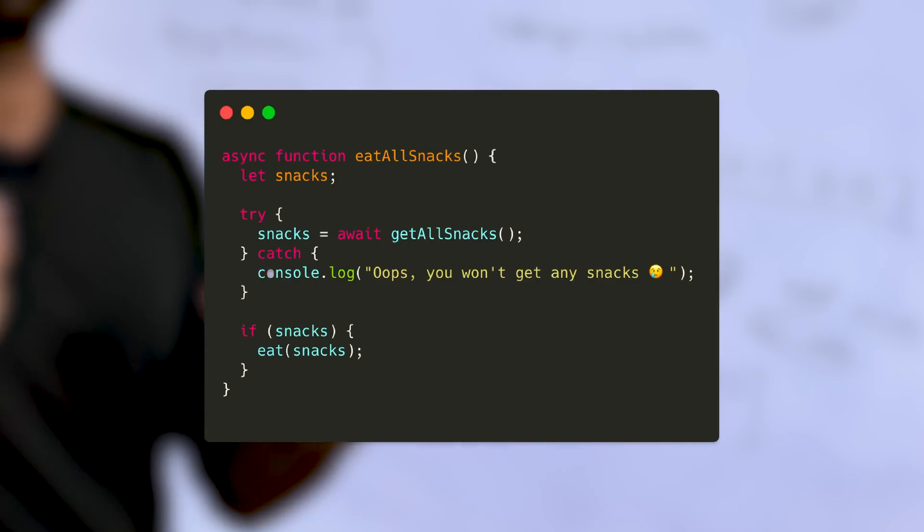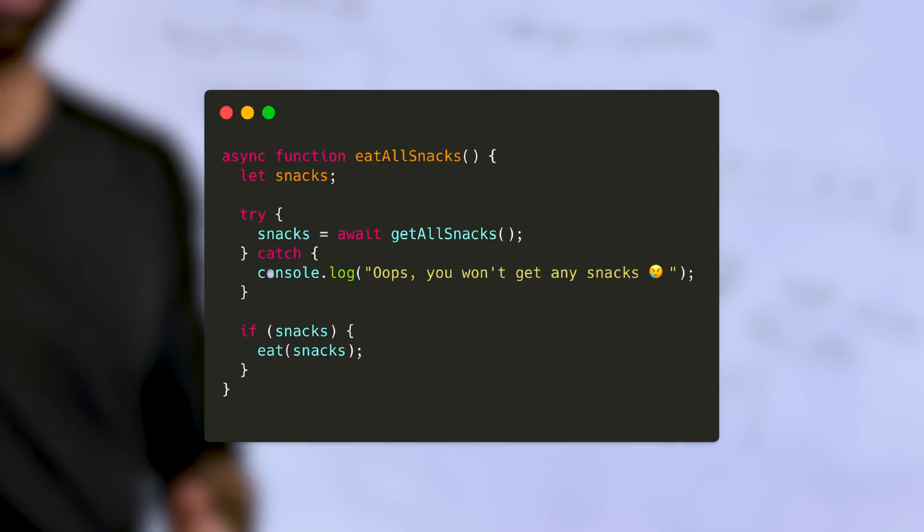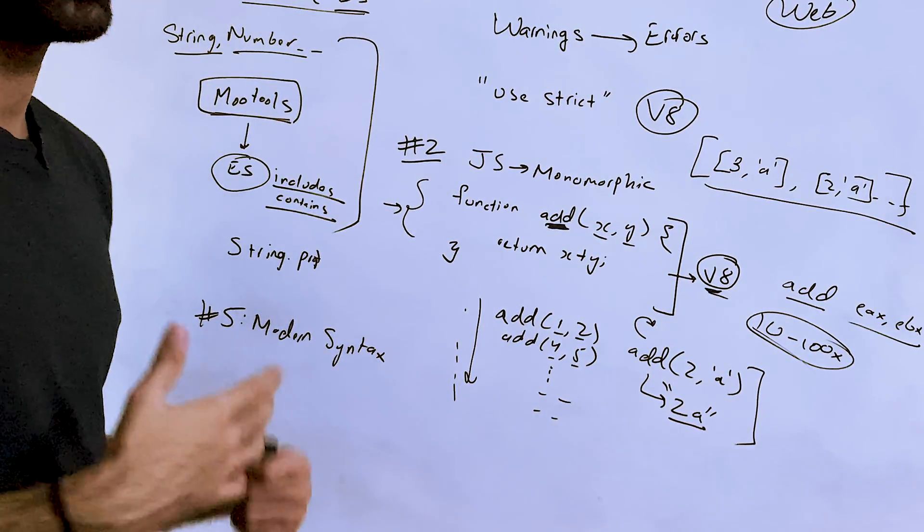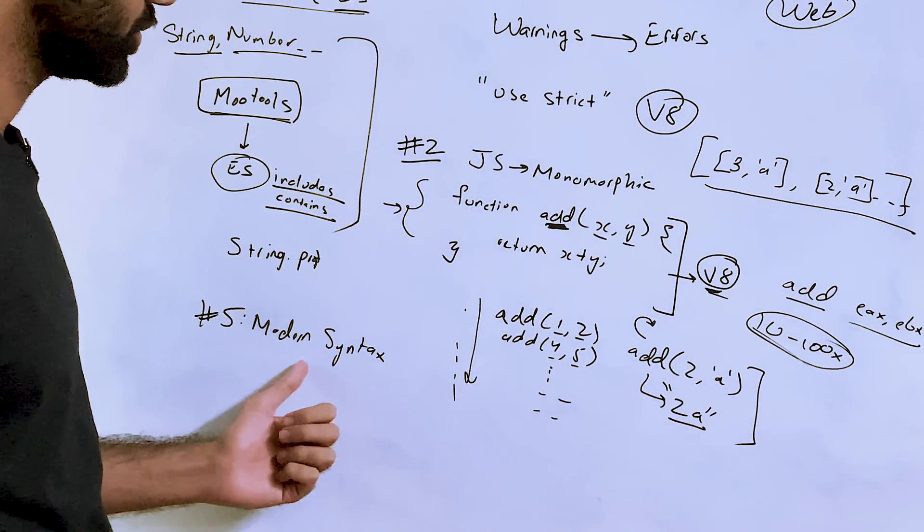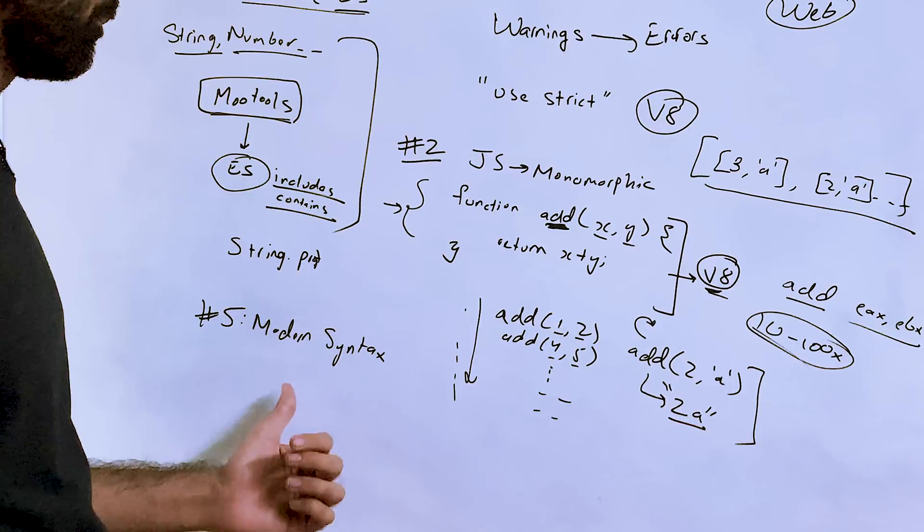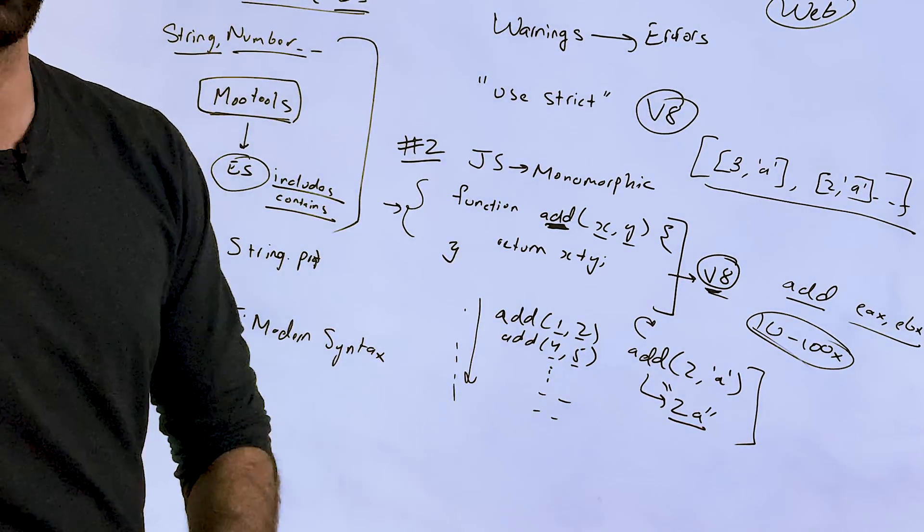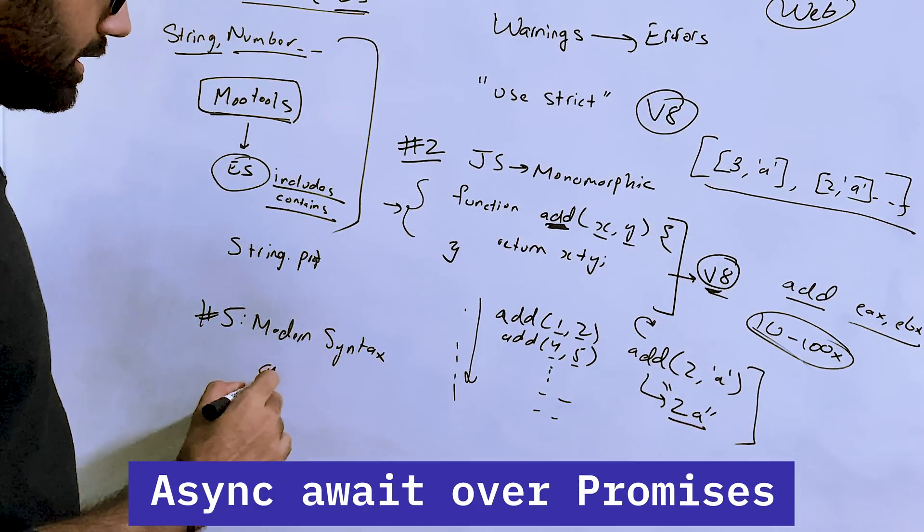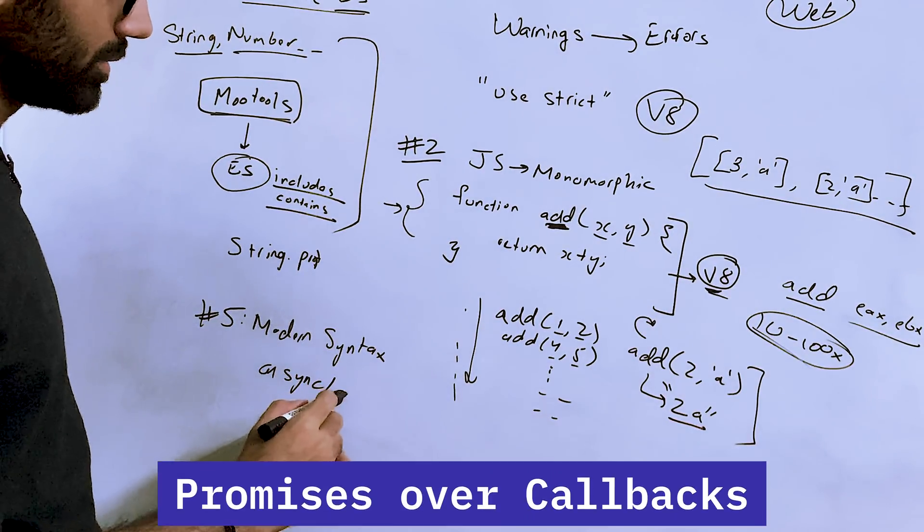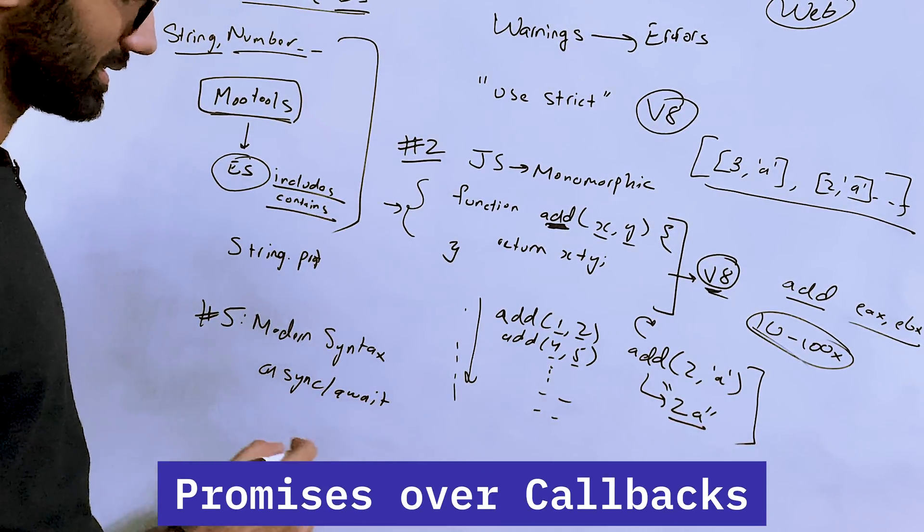But it also helps you sometimes in performance because modern features are more performant, better implemented, and are much more secure in terms of bugs and stuff. So async/await is definitely an example of this. Promises is an example of this over callbacks.